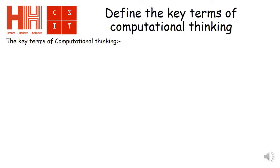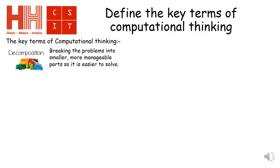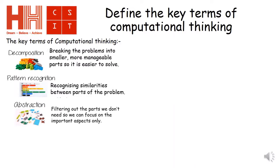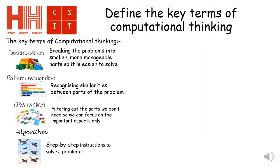So we're going to define the key terms of computational thinking. These key terms are as follows. The first one being decomposition — this is where we break a problem into smaller, more manageable parts, which will make it easier to solve. The second one is pattern recognition — this is where we recognise the similarities between parts of a problem. The next one is abstraction — this is where we filter out the parts we don't need so that we can focus on the important aspects only. And finally, algorithm — this is step-by-step instructions to solve a problem.